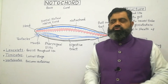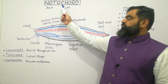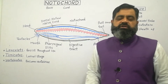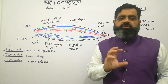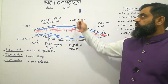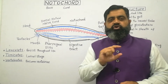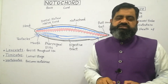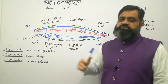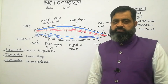Let's discuss the meaning of notochord. 'Noto' means back, while 'chord' means a rod-like structure which is semi-rigid. So notochord is a rod-like structure which is present on the dorsal or back side of the animal body.